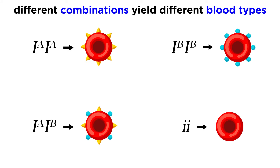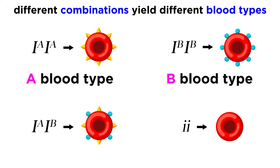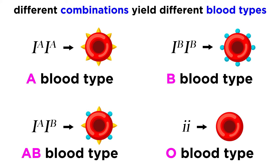Therefore, different combinations of these alleles can yield blood of type A, B, AB, or O if neither of these carbohydrates are found. We discussed the compatibility of blood types for transfusion in the anatomy and physiology series, so head over there for more information in that context.